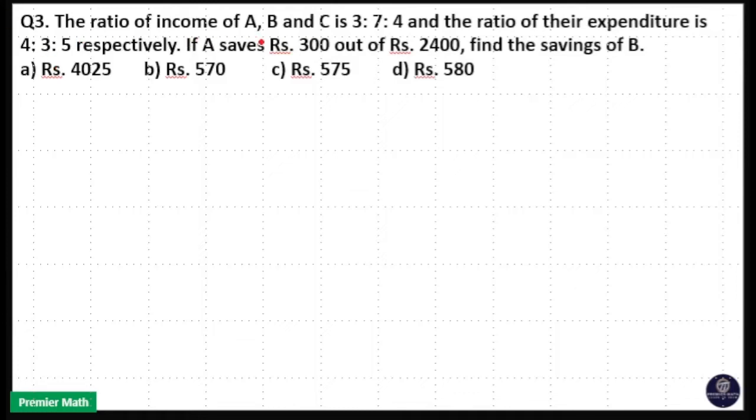The ratio of income of A, B and C is 3 is to 7 is to 4 and ratio of their expenditure is 4 is to 3 is to 5. If A saves 300 out of 2400 rupees, find the savings of B.